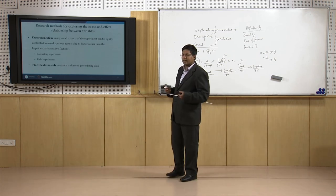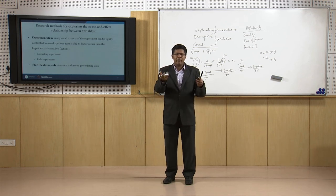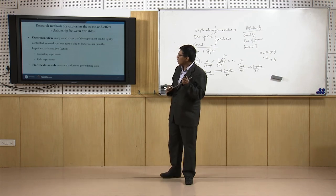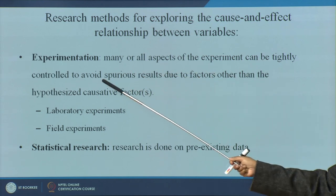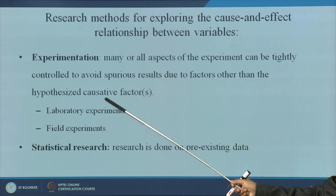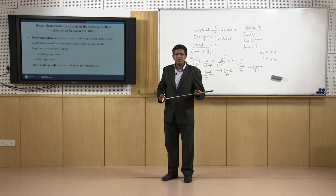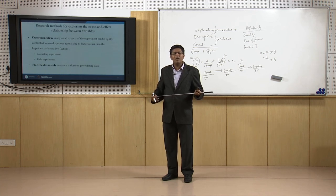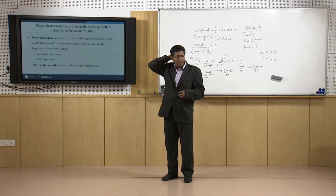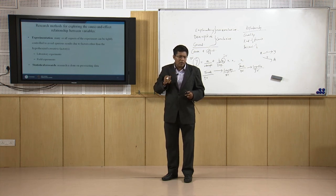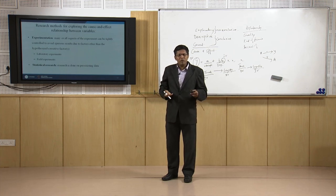Causal research is used mostly in pure science — for example, engineering in labs. It basically includes all the experiments. Many aspects of the experiment can be tightly controlled to avoid spurious results due to factors other than the hypothesized causative factors. Sometimes eccentric results occur because of a lack of understanding of independent and dependent variables. For example, birds flying in the sky having a connection with increased sales — that is a spurious relationship.